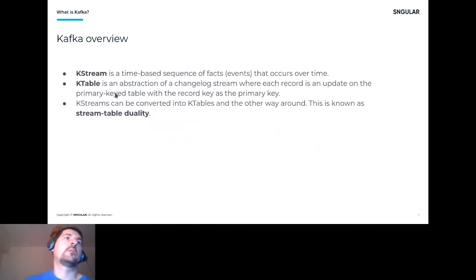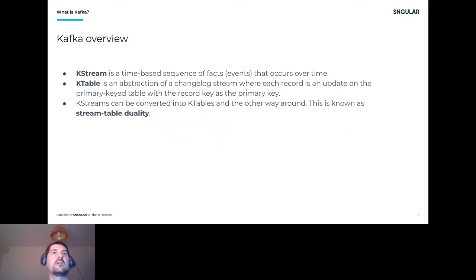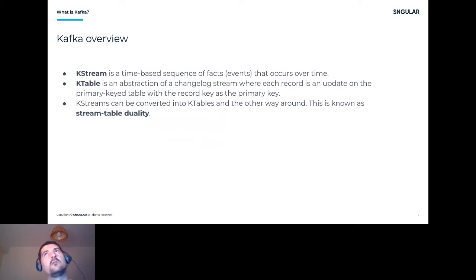When writing to Kafka everything is a topic, but processing data is only possible through two types of abstractions. One is Kafka Streams, which represents a time-based sequence of events. If you're submitting records 1, 2, 3, 4, 5 you will exactly replicate that in Kafka and read them in the same order.